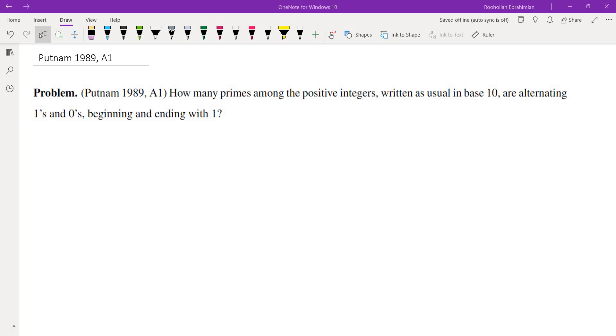Hello, in this video we're going to go over problem A1 from Putnam 1989. The question is this: how many primes among the positive integers written as usual in base 10 are alternating 1's and 0's beginning and ending with 1?